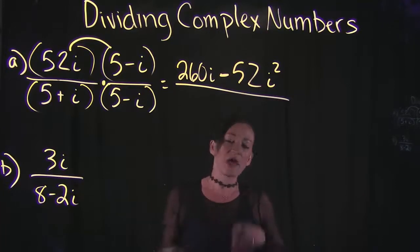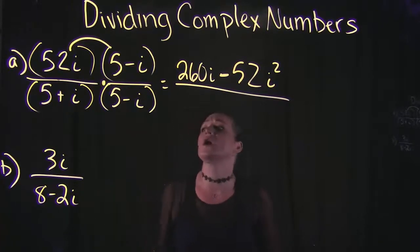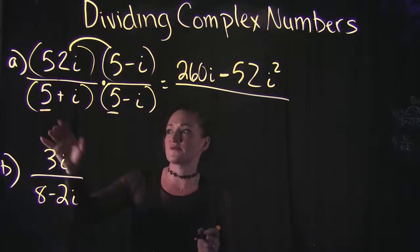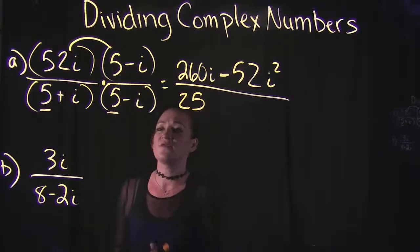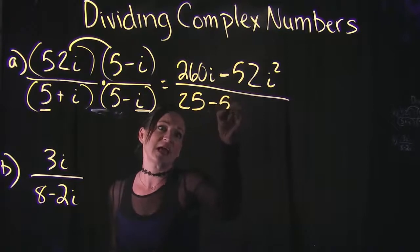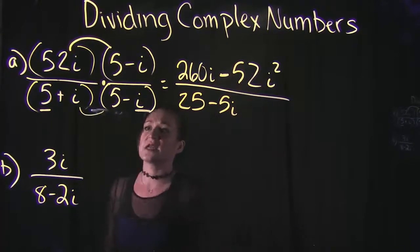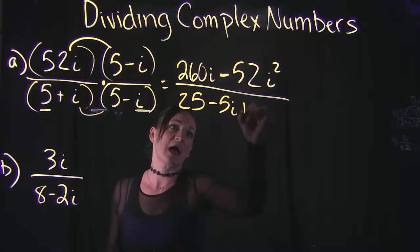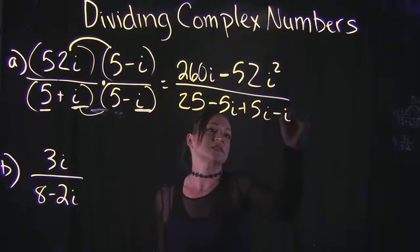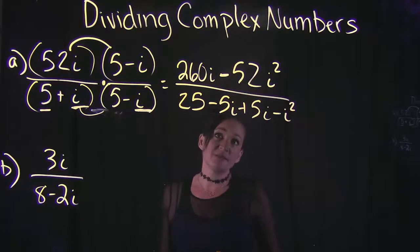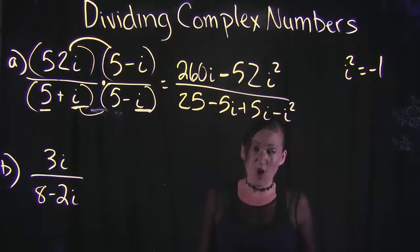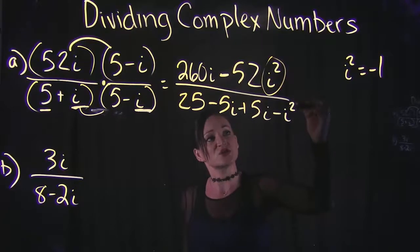In the denominator we have a binomial times a binomial, so we use the FOIL method. First times first: 5 times 5 is 25. Outside terms: 5 times negative i is negative 5i. Inside terms: i times 5 is positive 5i. Last times last: i times i gives us negative i squared. We need to keep in mind the rule that i squared equals negative 1.